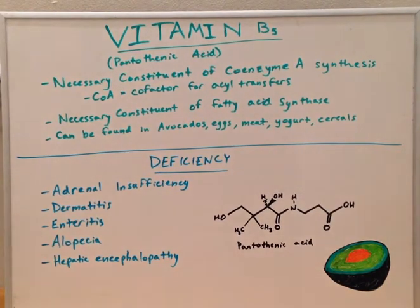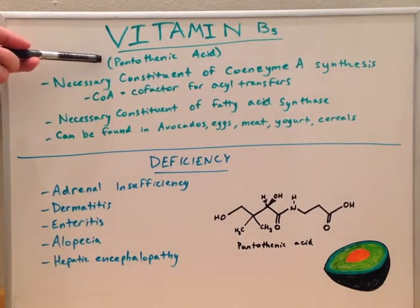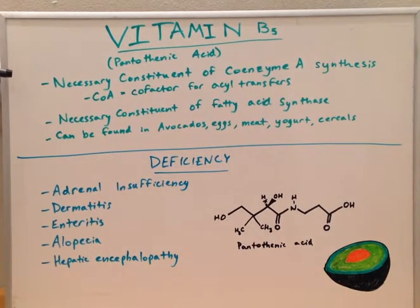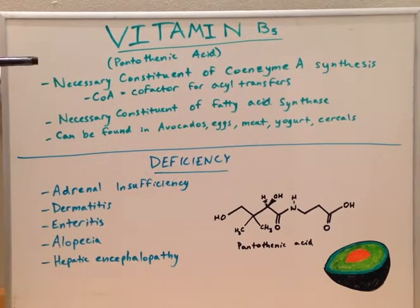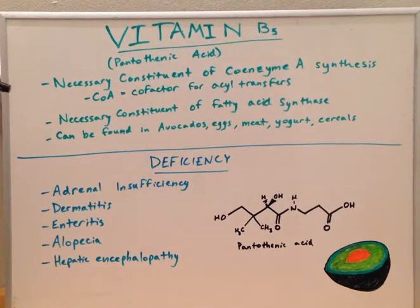Today's lecture continues our series on vitamins with vitamin B5, also known as pantothenic acid. Pantothenic acid is a necessary constituent of coenzyme A synthesis. CoA is an important cofactor for acyl transfer reactions. Pantothenic acid is a big player in a variety of actions that occur throughout our body as far as metabolism goes.